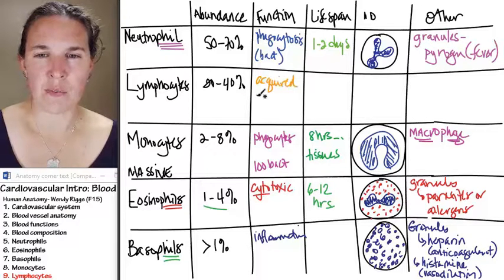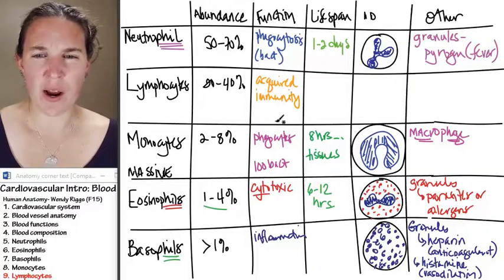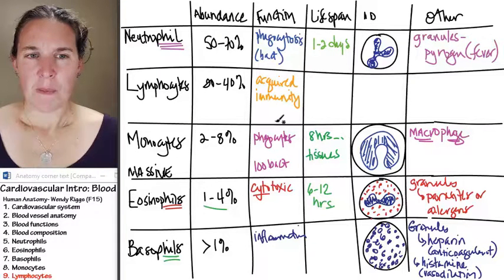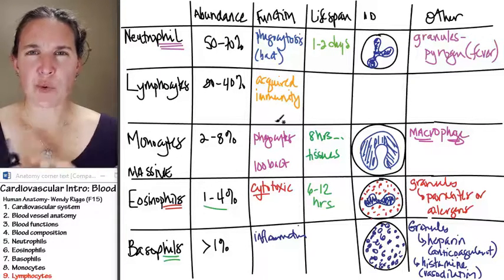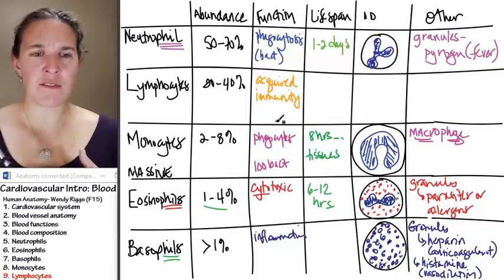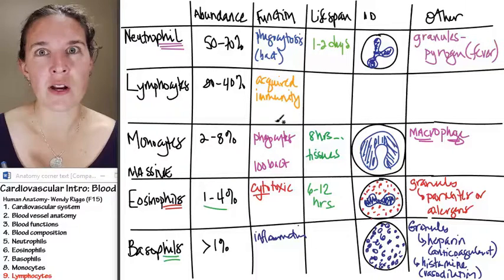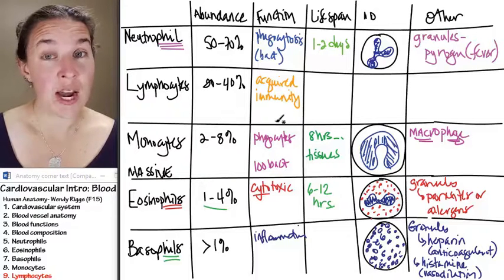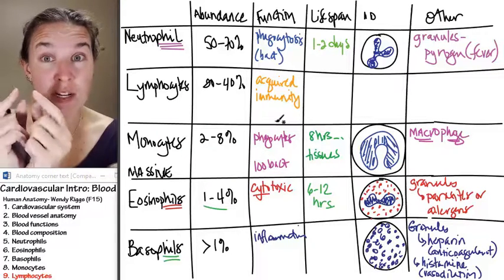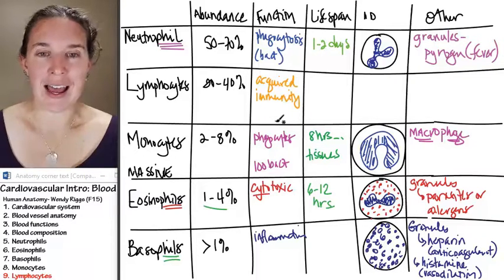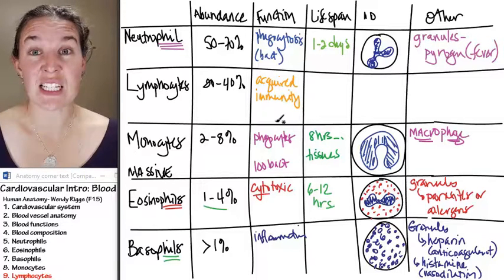Acquired immunity. So what is acquired immunity? You have two branches of your immune system. You have the branch that totally responds to anything, and then you have a very specific branch that responds to a very specific guy. And lymphocytes facilitate this.